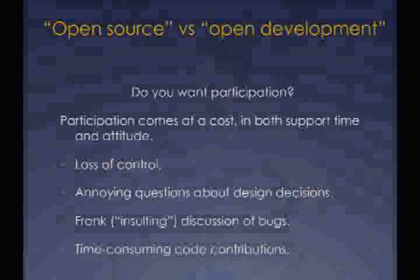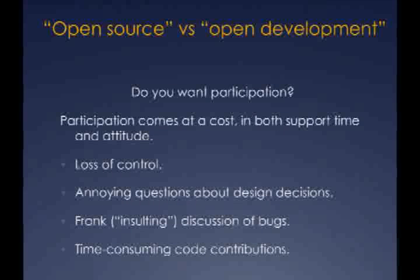You also get annoying questions about design decisions you may have made — frank, otherwise known as insulting, discussion of bugs, often on a public mailing list. And horror of horrors: time-consuming code contributions, where other people give you code that may even fix problems, and you have to review it. Now, the irony is that these very annoying things are actually the hallmarks of a successful open source project. You no longer have tight control of the development process. Other people are collaborating with you on design decisions, pointing out places where you did something wrong, and even contributing back code.